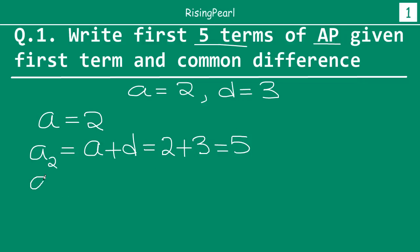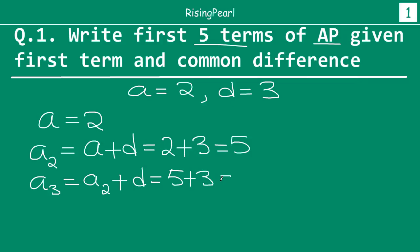Similarly, to get the third term, we will take the second term and we will add the common difference to it. So the third term: second term is 5, plus common difference is 3. 5 plus 3 is 8.